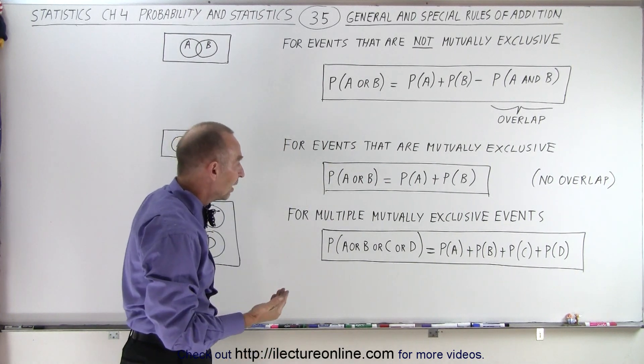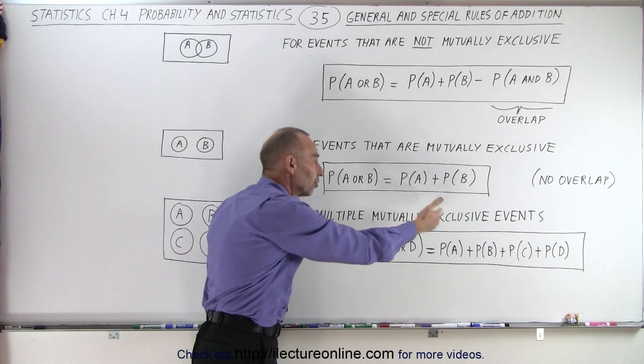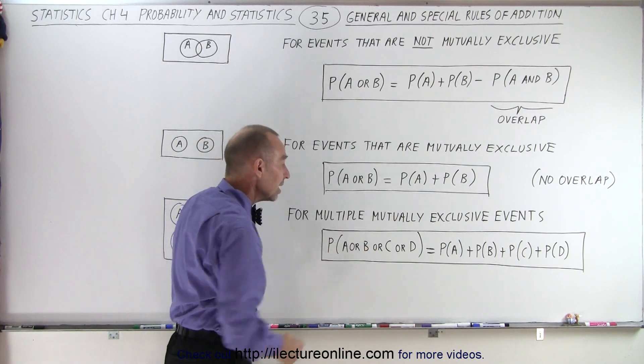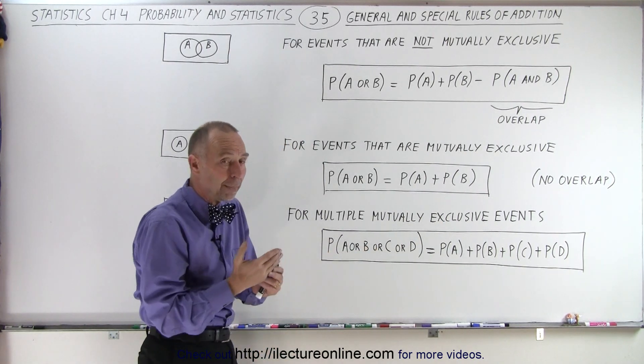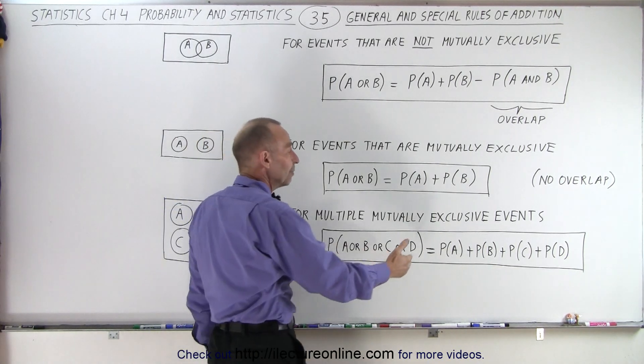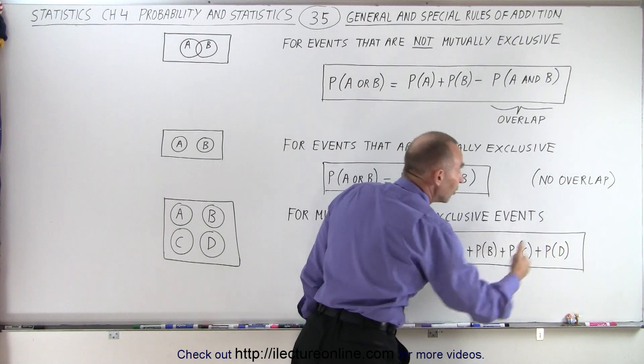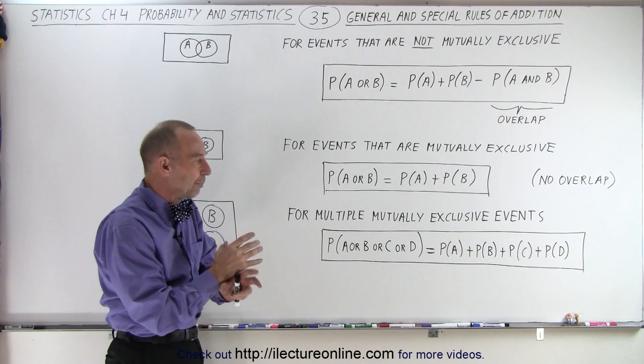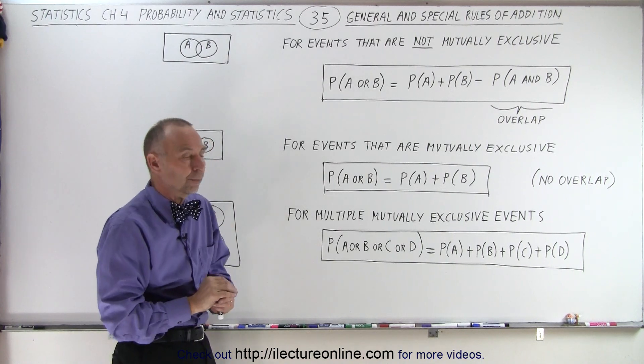And if there's multiple mutually exclusive events, like in this example four of them—A, B, C, or D—then if we want to find the probability of A or B or C or D, we simply add the probabilities of each individual event, and we don't have to worry about any overlap, so we don't have to have a subtraction term.